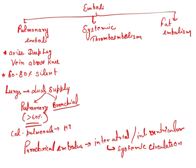Regarding systemic thromboembolism: these arise in the heart, and the major site is atrial embolization. They are lodged at the lower extremities, brain, and less commonly in other organs like the kidney, spleen, and upper extremities. About 75 percent of them are embolized in the lower extremities.